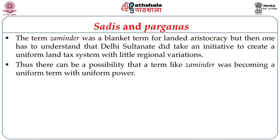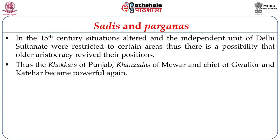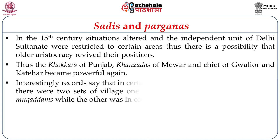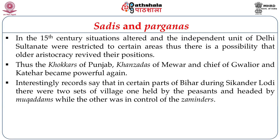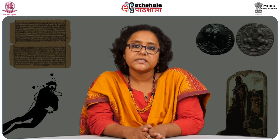The term zamindar was thus becoming a uniform term with uniform power. The 15th-century situation altered, and as the independent units of the Delhi Sultanate were restricted to certain areas, there is a possibility that the older aristocracy revived their positions. The Kokars of Punjab, the Khanazads of Mewar, and the chiefs of Gwalior and Katehr became powerful again. Records say that in certain parts of Bihar during Sikandar Lodi, there were two sets of village heads — one held by peasants and another controlled by the Mukaddams and Zamindars. The successor of Sher Shah reviewed the rural aristocrats and complained that they did not pay their own taxes and exploited the peasants to a greater extent. The tussle between the centre, the middlemen, and the peasantry always remained unresolved.